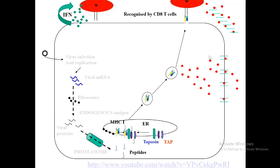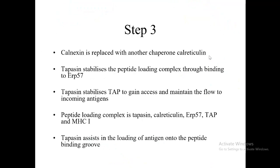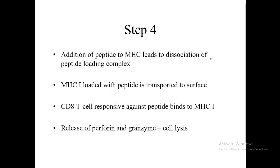A quick summary of MHC1 presentation: Calnexin is replaced by Calreticulin. Tapasin stabilizes the peptide-loading complex through binding ERP57. Tapasin then stabilizes TAP and brings everything together so that MHC1 is close to the flow of incoming antigen. The peptide-loading complex is Tapasin, Calreticulin, ERP57, TAP, and MHC1. Tapasin facilitates the addition of the antigen or epitope onto the peptide binding groove. Addition of the peptide to MHC1 leads to dissociation of the peptide-loading complex, and MHC1 loaded with peptide is then transferred to the surface, where the activated CD8 cell interacts with it and releases perforin and granzyme, resulting in cell lysis.